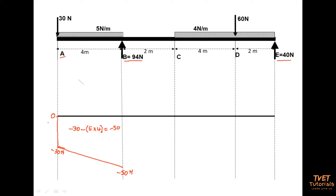Now I'm at point B. At point B there is a reaction. A reaction causes a positive shear force, so we go up using a vertical line. The magnitude of the reaction at point B is 94 newtons. I calculate: minus 50 plus 94 gives positive 44. I draw a vertical line from negative 50 up to positive 44, and label that corner 44 newtons.